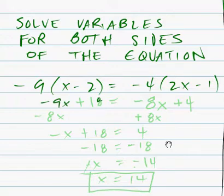Negative 9 times negative 2, of course, gives us positive 18. Negative times a negative makes it positive. Negative 4 times 2x is negative 8x. Negative 4 times negative 1 gives us positive 4.